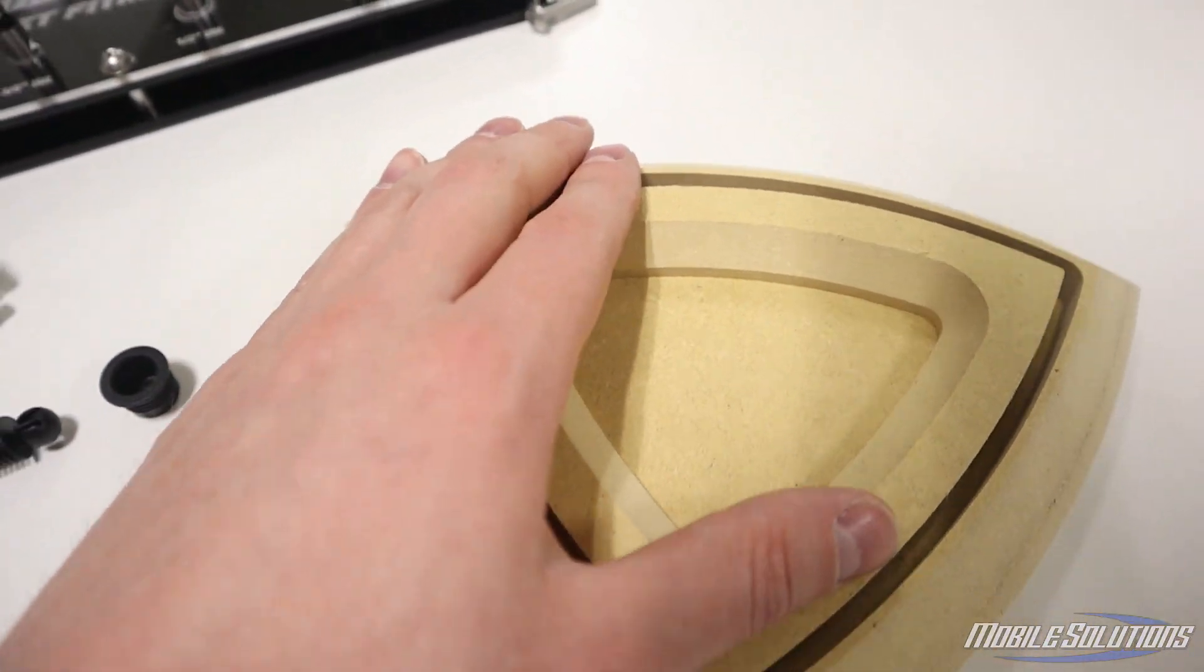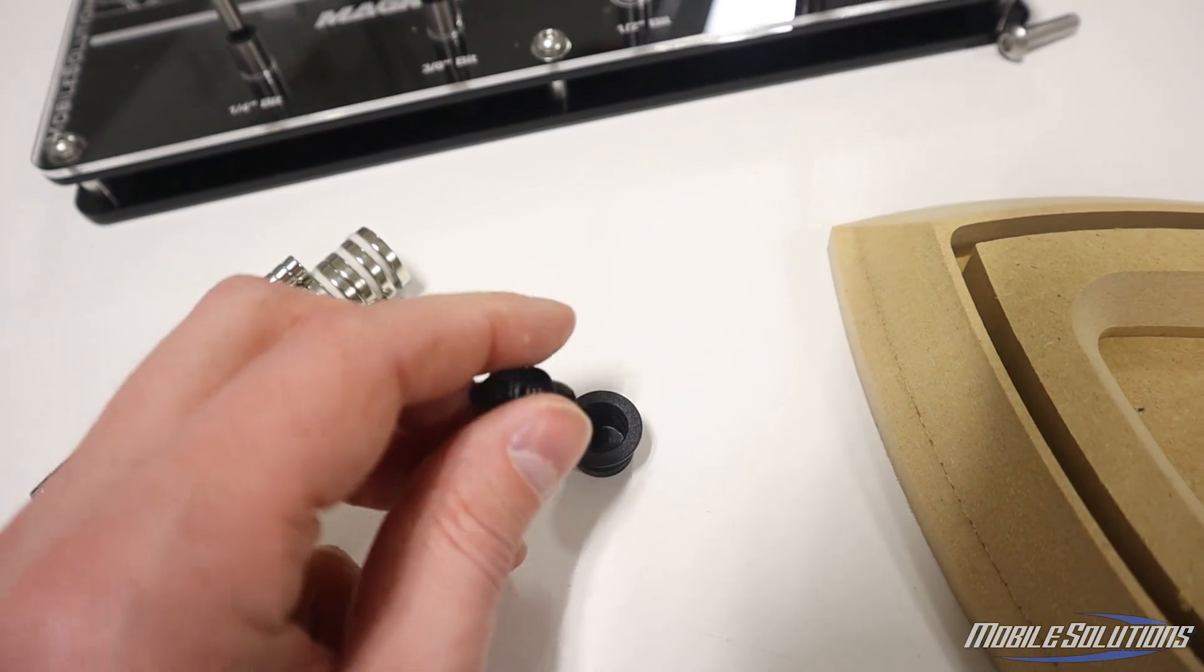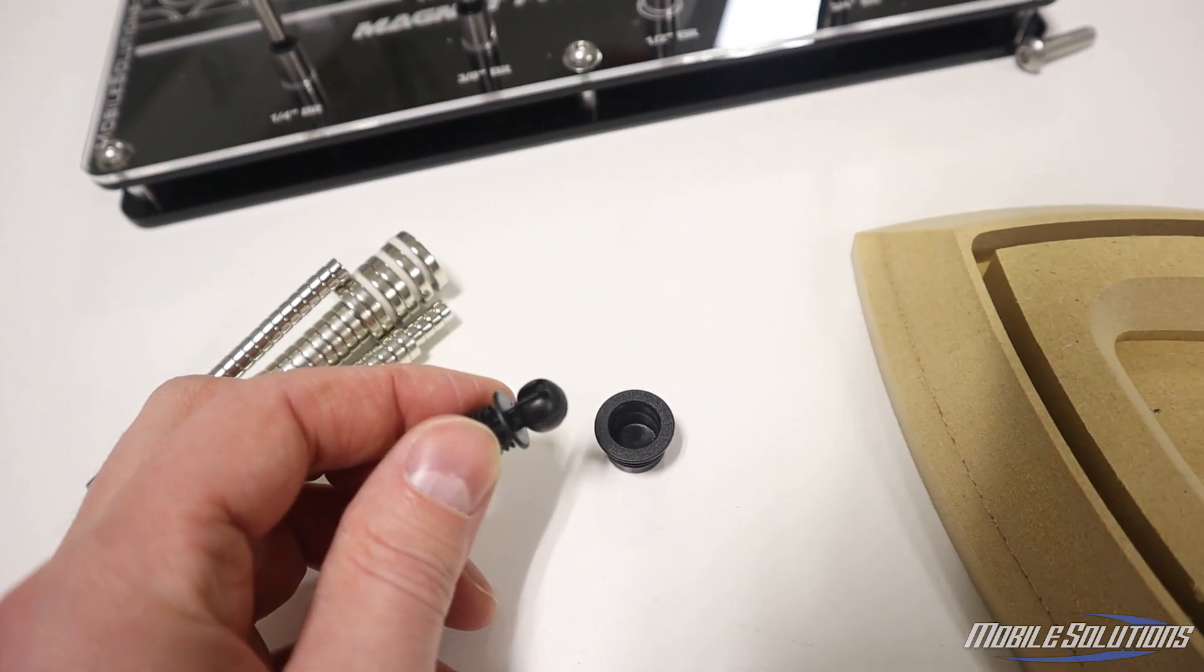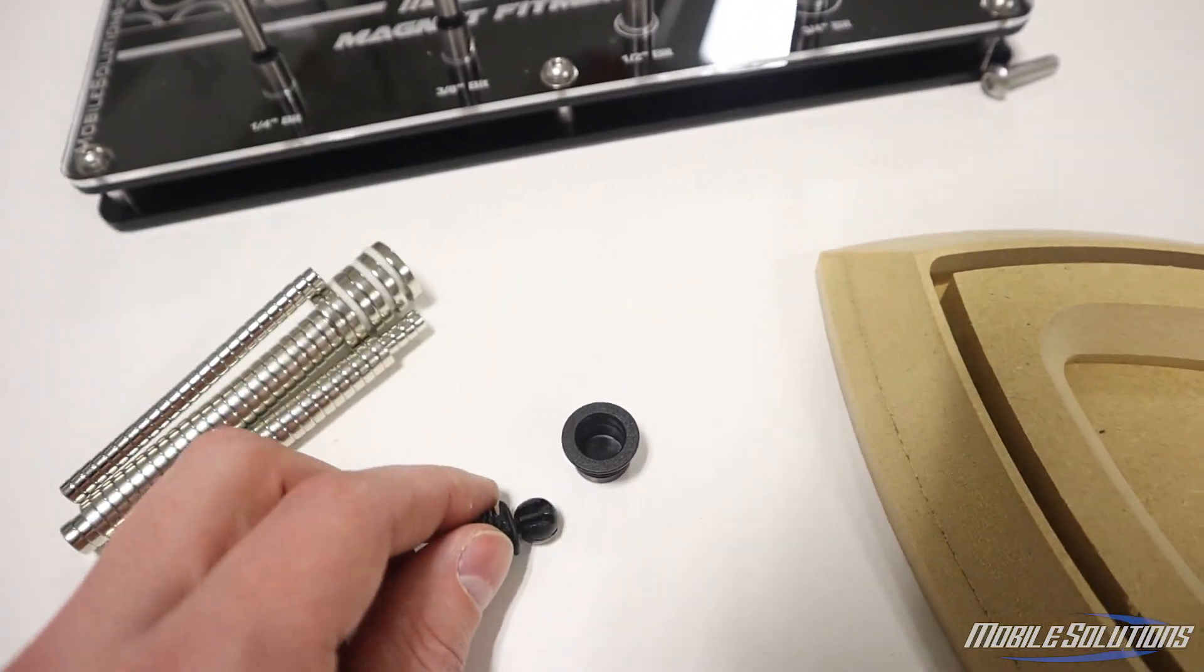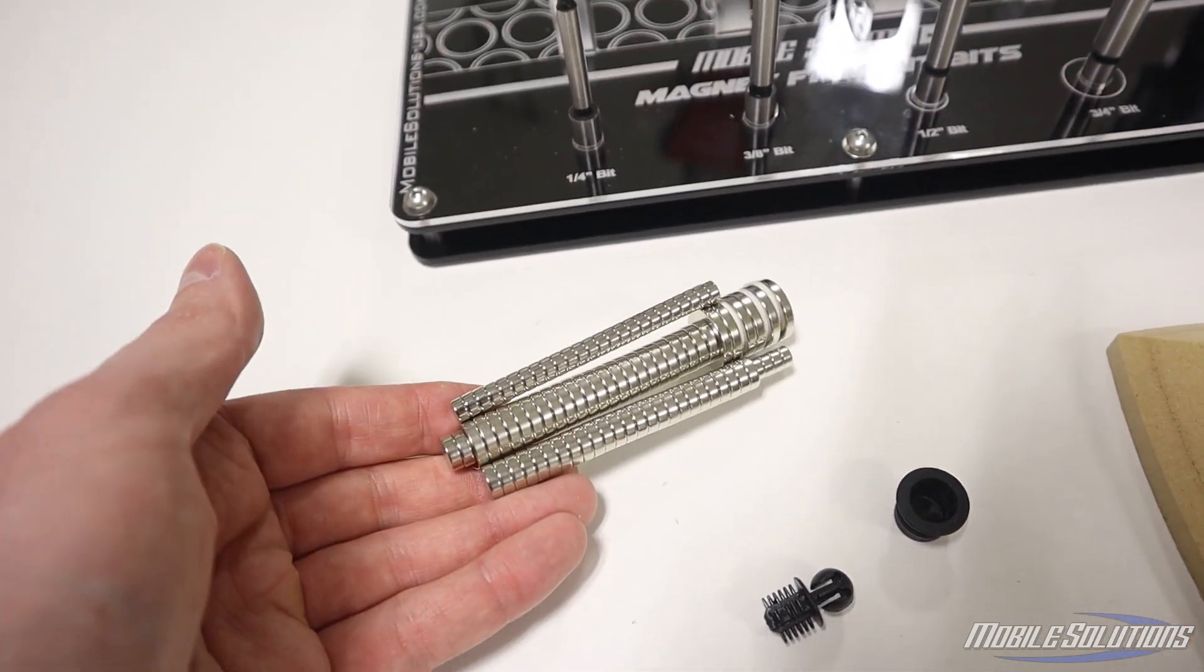Another good reason to use magnets for this type of assembly as opposed to using something like a plastic fastener is these plastic fasteners have a tendency to become worn down after being removed just a couple of times, whereas neodymium magnets can retain their magnetic strength for hundreds of years.